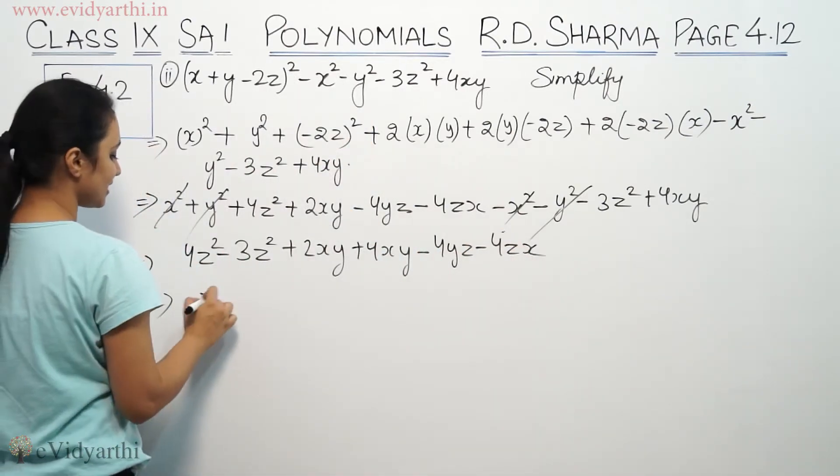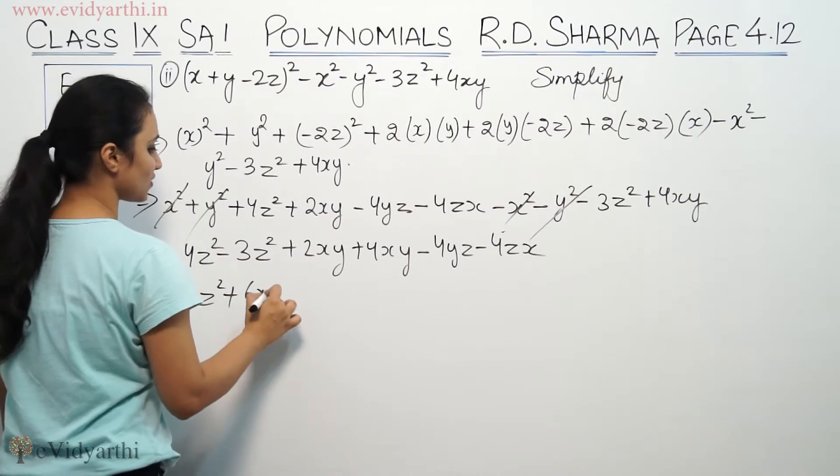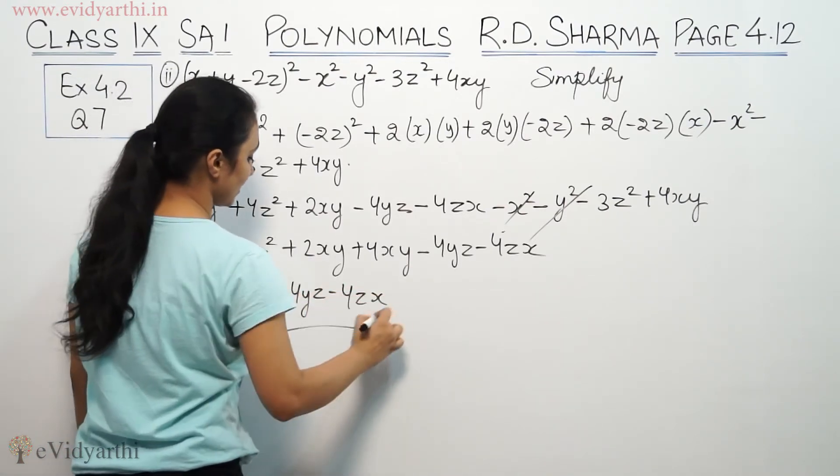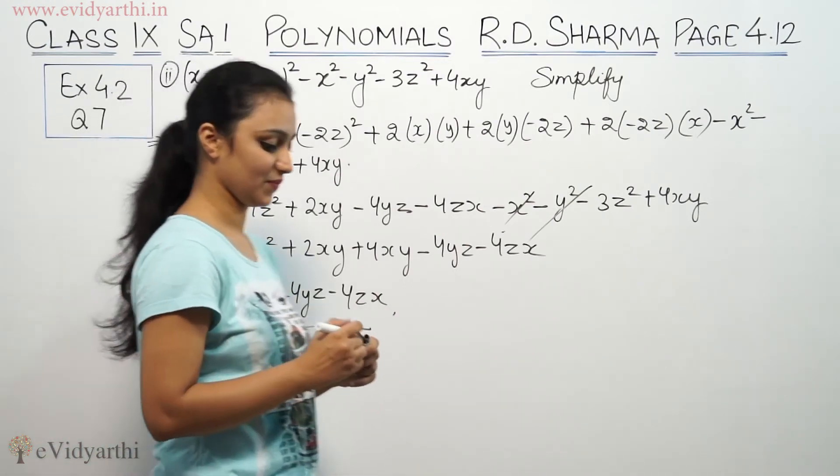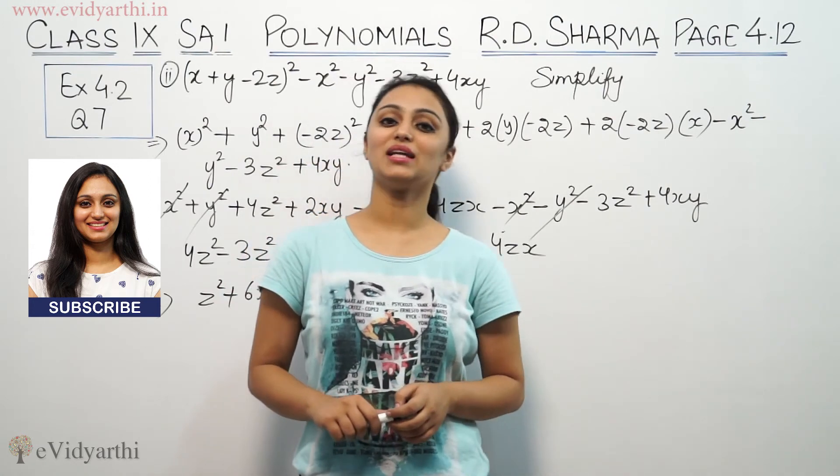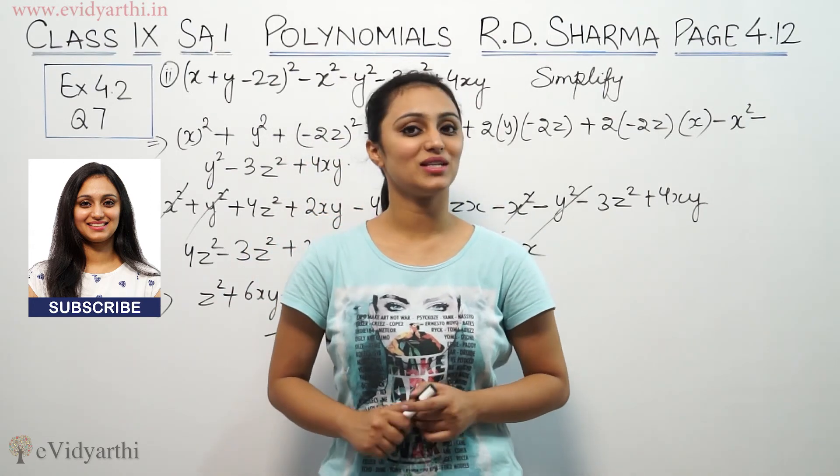Here we have z² + 6xy - 4yz - 4zx. This is the answer. This was question 7 from exercise 4.2 and do watch the next video for some more questions. Bye bye.